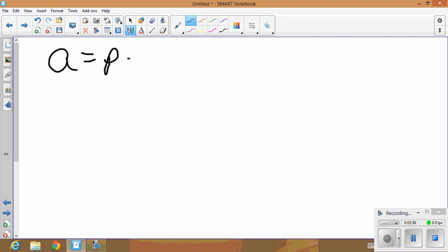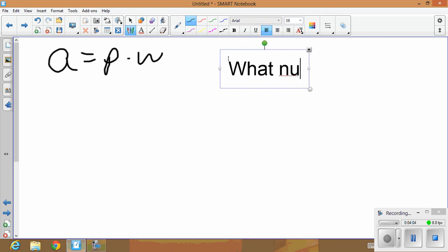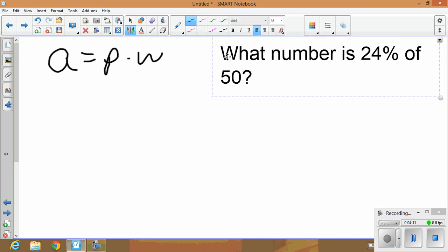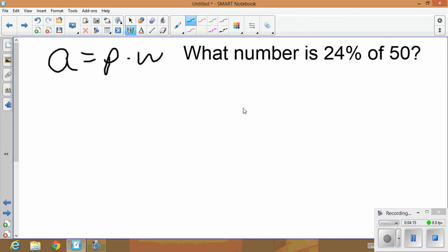So let's start with the formula a equals p times w. And here's something you would see: What number is 24 percent of 50? So what I'd like to do from here is, before I even begin, underline the key components. What number 'is' 24 percent, 24 percent 'of' 50. Could you notice how I keep seeing these keywords, 'is' and 'of'? This is my percent, so I'm going to convert it to a decimal, 0.24. I move the decimal left two places.